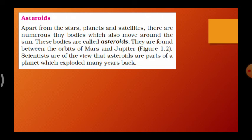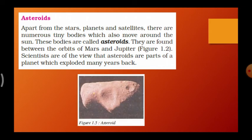Next, we are going to see about asteroids. Apart from the stars, planets, and satellites, there are numerous tiny bodies which also move around the Sun. These bodies are called asteroids. They are found between the orbit of Mars and Jupiter. Scientists are of the view that asteroids are parts of a planet which exploded many years back.